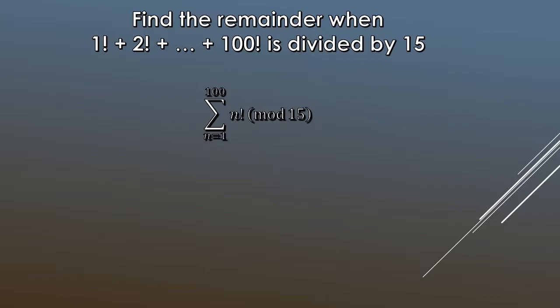Here's a trickier question: find the remainder when 1! + 2! + 3! + 4! + ... + 100! is divided by 15. In summation notation, this is the sum of n! from n = 1 to 100, mod 15. You're not expected to compute all 100 factorials — instead, use intuition to spot a pattern. Start by writing out the first few factorials and taking mod 15.